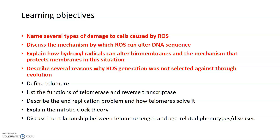We're going to talk about the different types of damage that ROS, or reactive oxygen species, can cause to cells — particularly how ROS can alter DNA, how ROS can alter membranes, both the plasma membrane and membranes of organelles. We'll also talk about why ROS, even though it's so harmful, has not been selected against, and some advantages that reactive oxygen species confer to organisms.